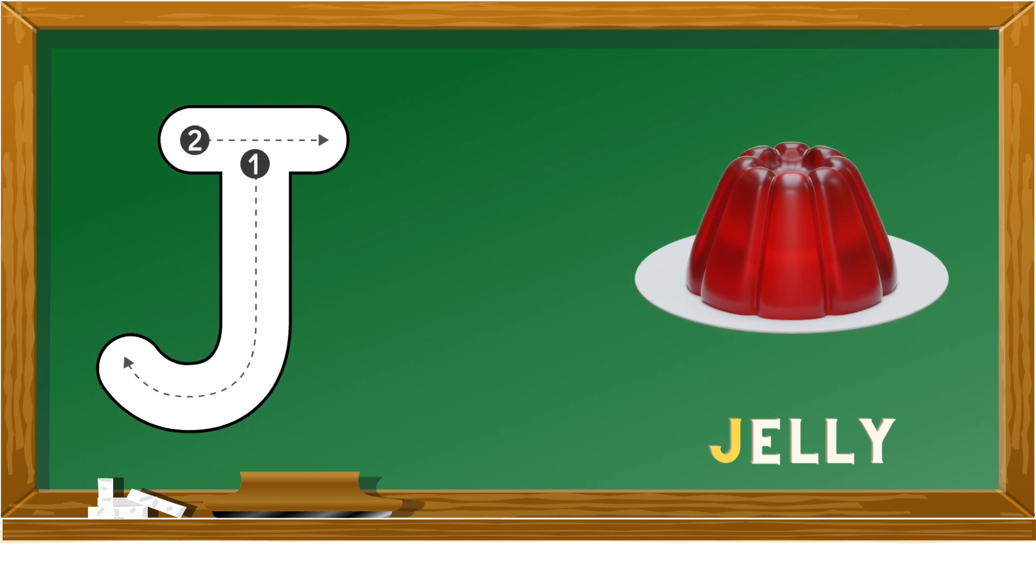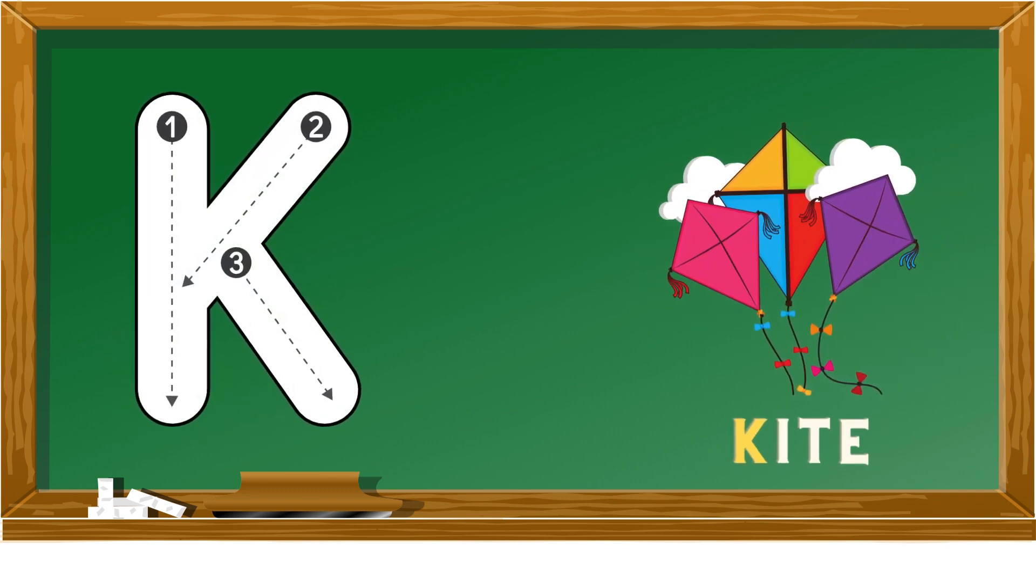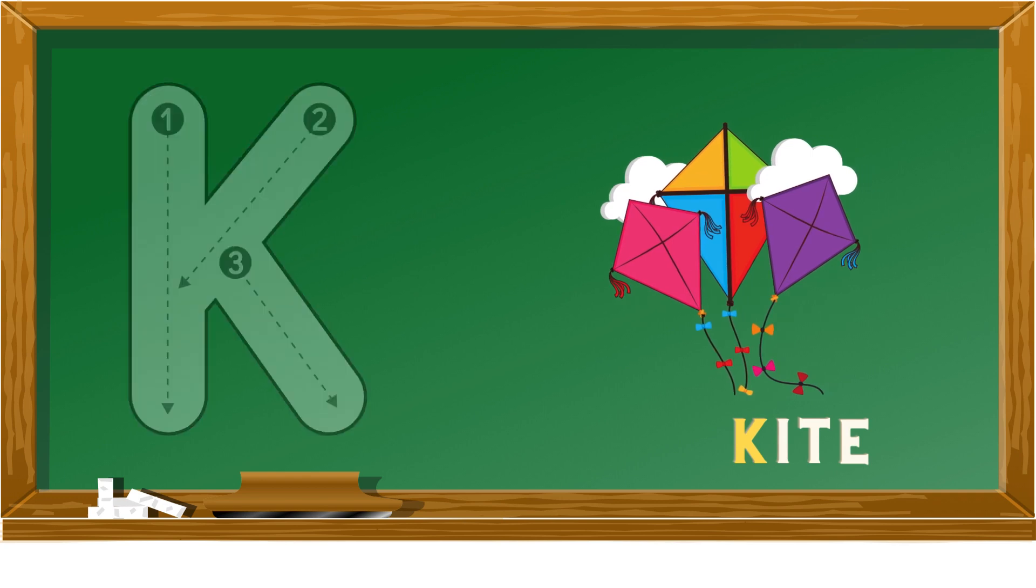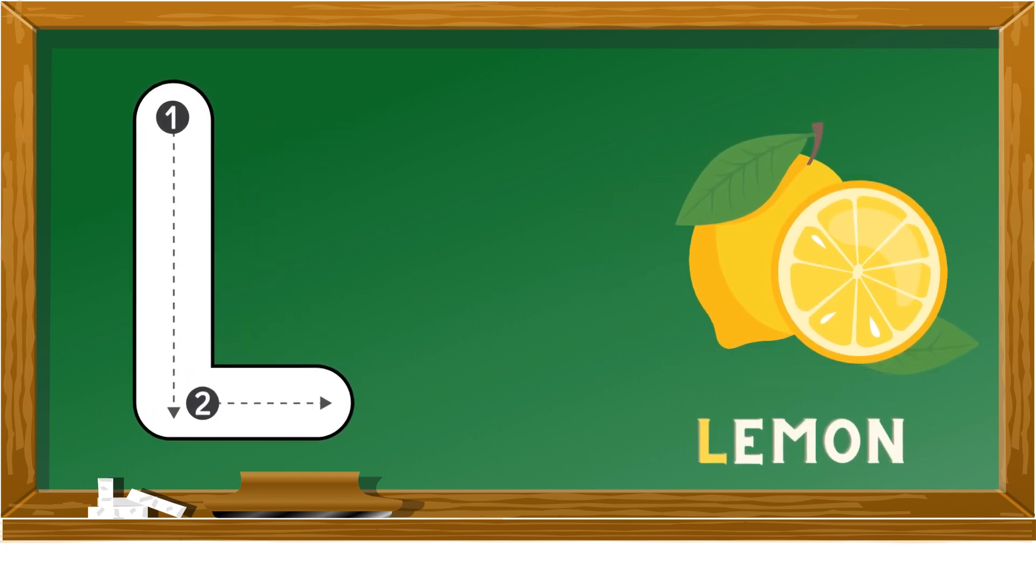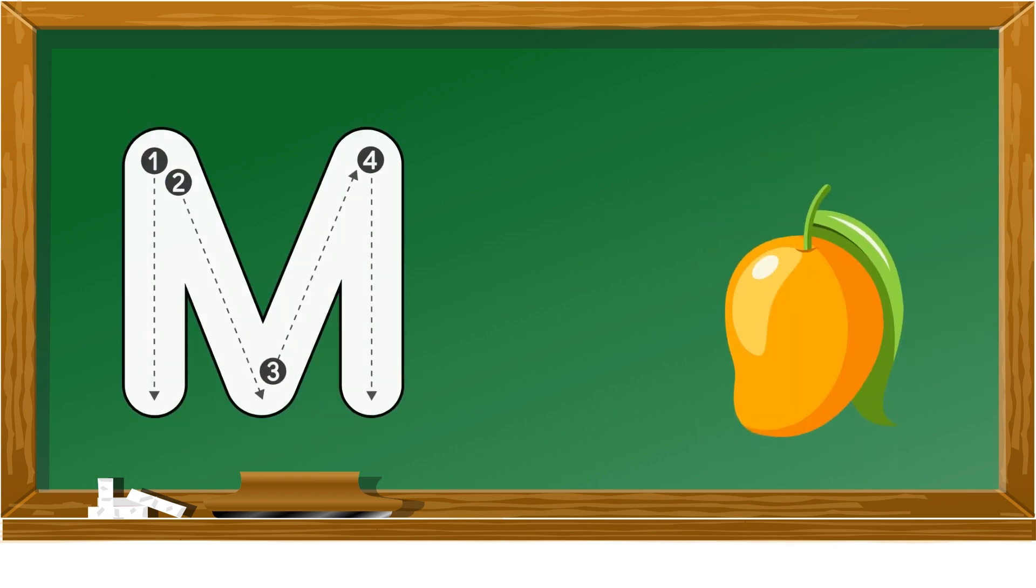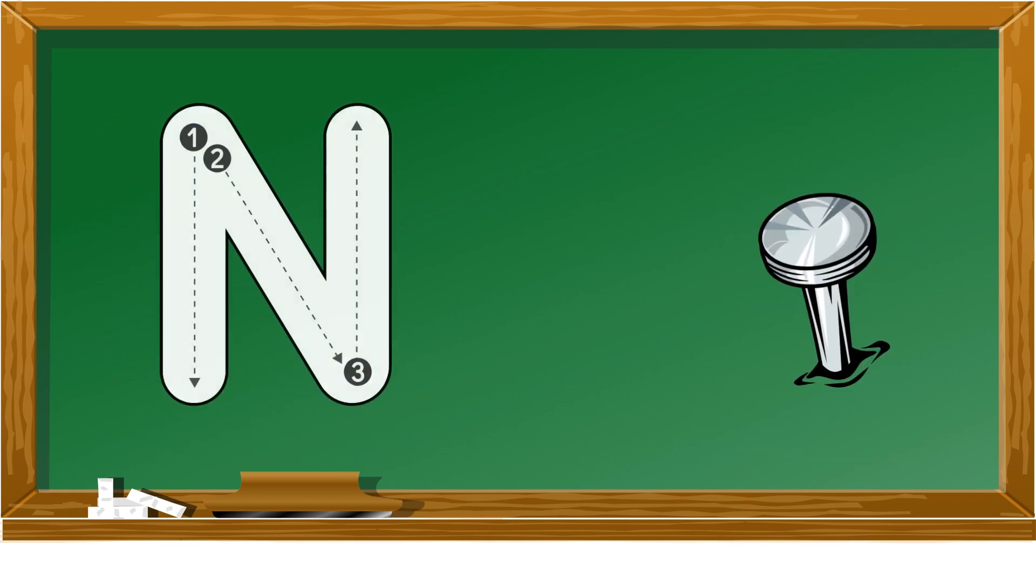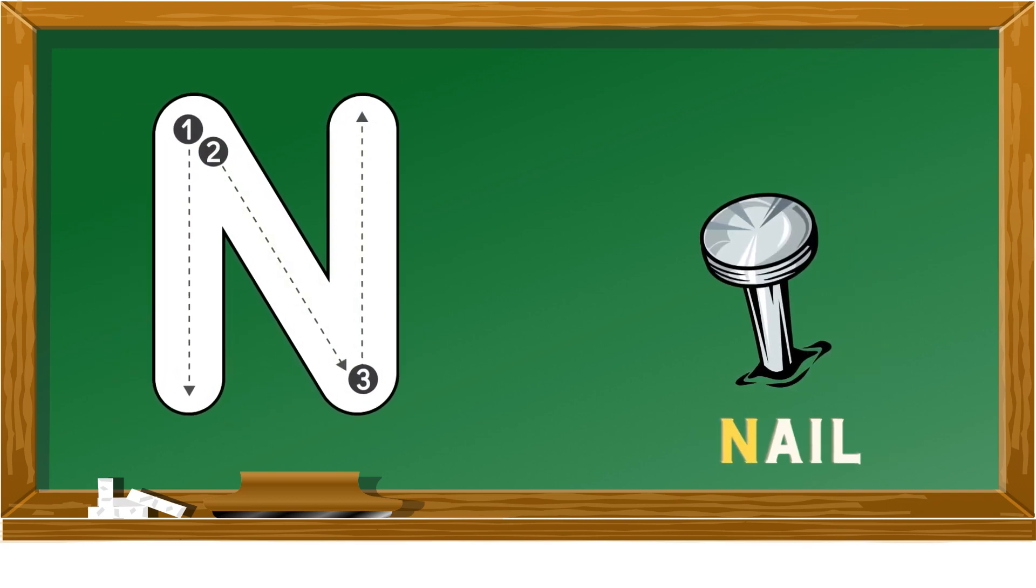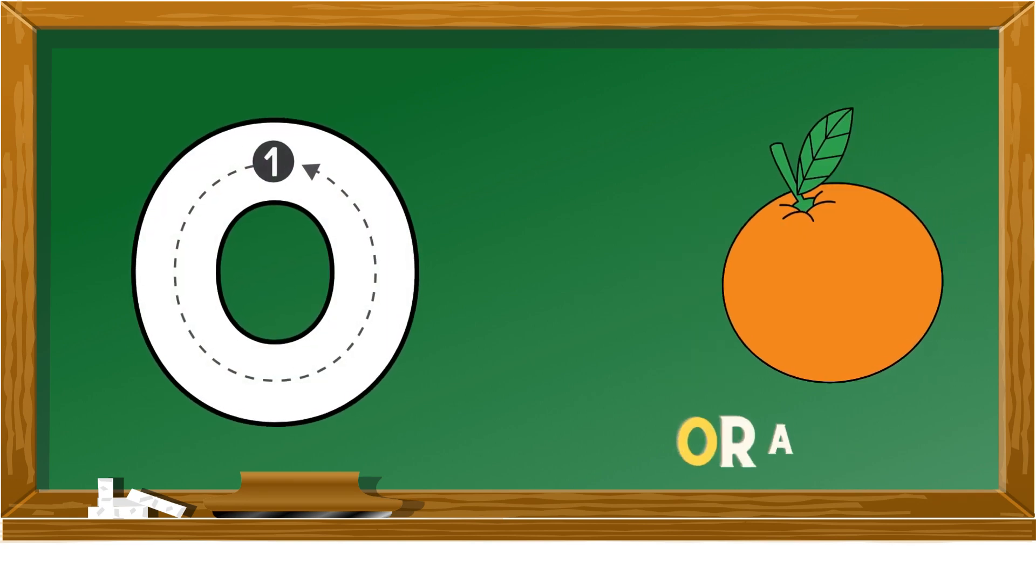K is for kite, L is for lemon, M is for mango, N is for nail, O is for orange.